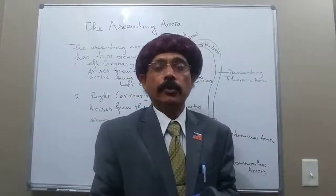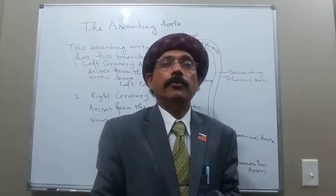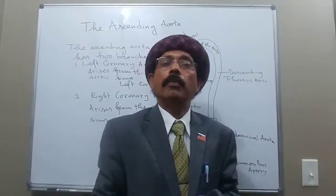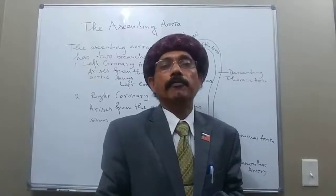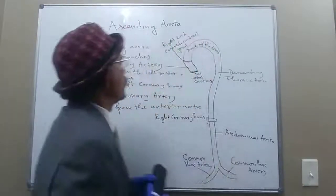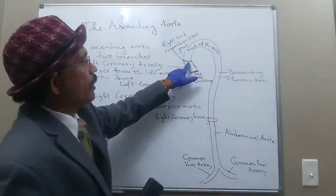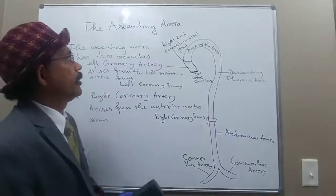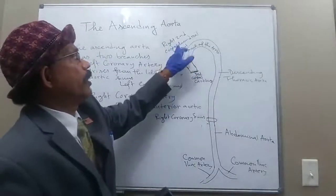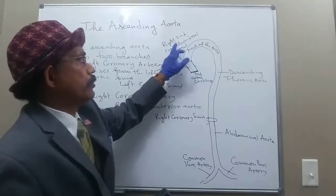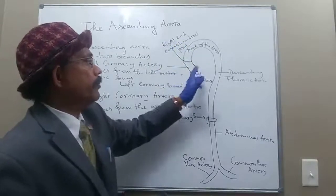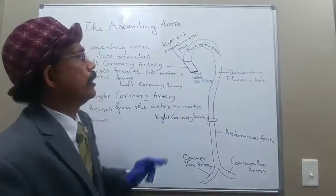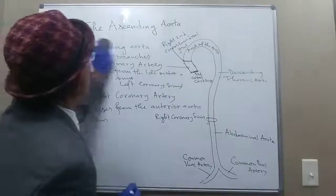To summarize: the ascending aorta is about five centimeters long. It arises from the upper end — the base — of the left ventricle, begins at the left side of the sternum at the third costochondral level, and continues as the arch of the aorta at the right second costochondral joint.